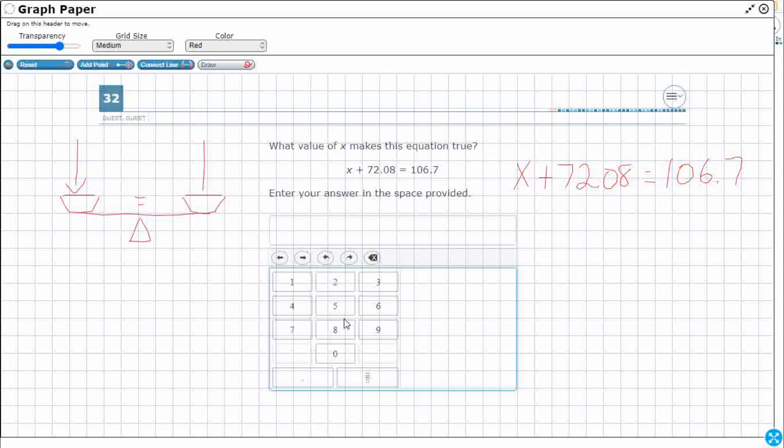So what are we going to do? I need to get that x all by itself. And in order for me to get that x by itself, I need to get rid of this. And let me change my color right here. This is the only thing that's keeping that x from being by itself, that plus 72.08. So what is the inverse operation of addition? The inverse operation of addition is subtraction.